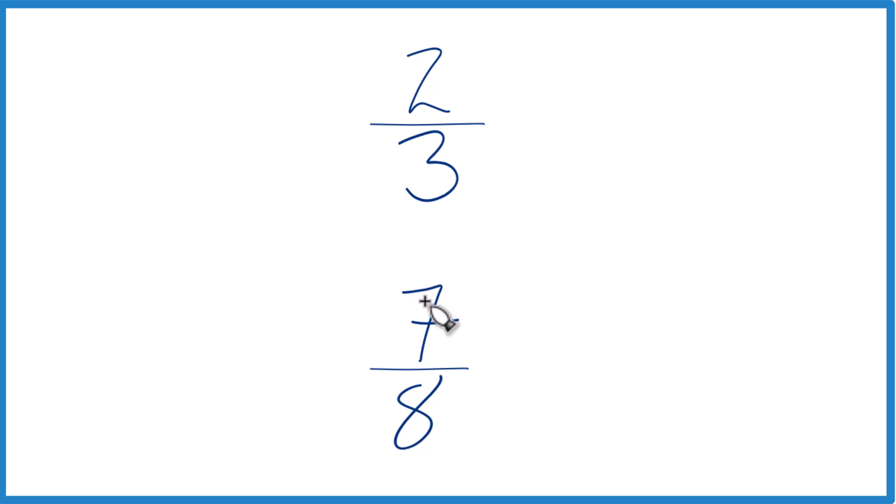The other way is to find a common denominator. Right now we have three and eight, but if we could find a number that both three and eight go into evenly, then we could just compare the numerators. Let's do that. I'm going to take three times eight.